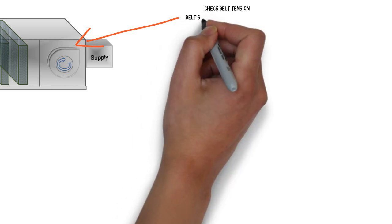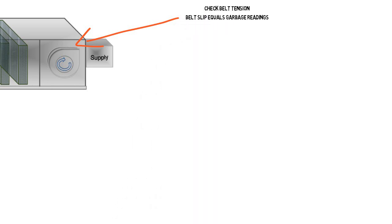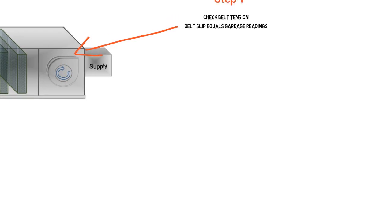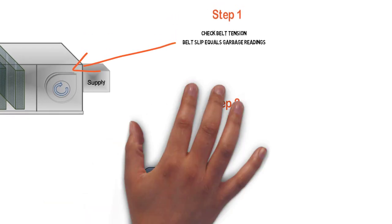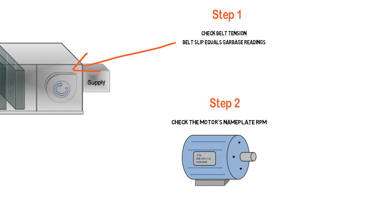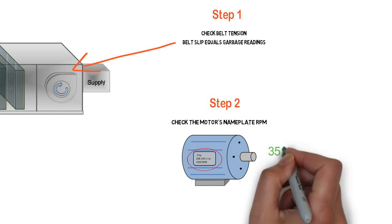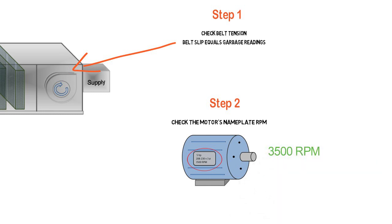First, we're going to make sure the belts are tight. Because if the belts are loose, we're going to have slip. And if we have slip, all our readings are going to be garbage, which means our airflow calculation will be garbage. While we're in that compartment, we're going to check the RPM on the motor's nameplate. In this example, it's 3,500 RPM.